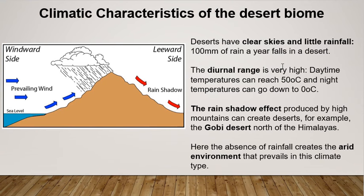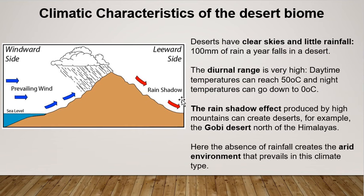Deserts do not receive much rainfall, and there are several reasons for this. The main reason can be attributed to the rain shadow effect. A lot of deserts are located beside mountains — for example, the Gobi Desert beside the Himalayas. When warm air comes in off a sea, it must rise over the mountains and will rain on that side. But on the other side of the mountain, you've got a rain shadow, because the warm air has lost all its moisture. As the air moves back down it has no more moisture, so it never rains in that area.